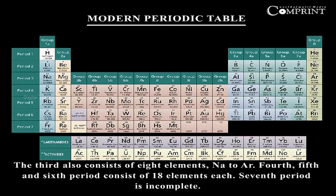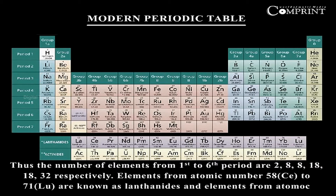The seventh period is incomplete. Thus, the number of elements from the first to sixth period are 2, 8, 8, 18, 18, and 32 respectively.